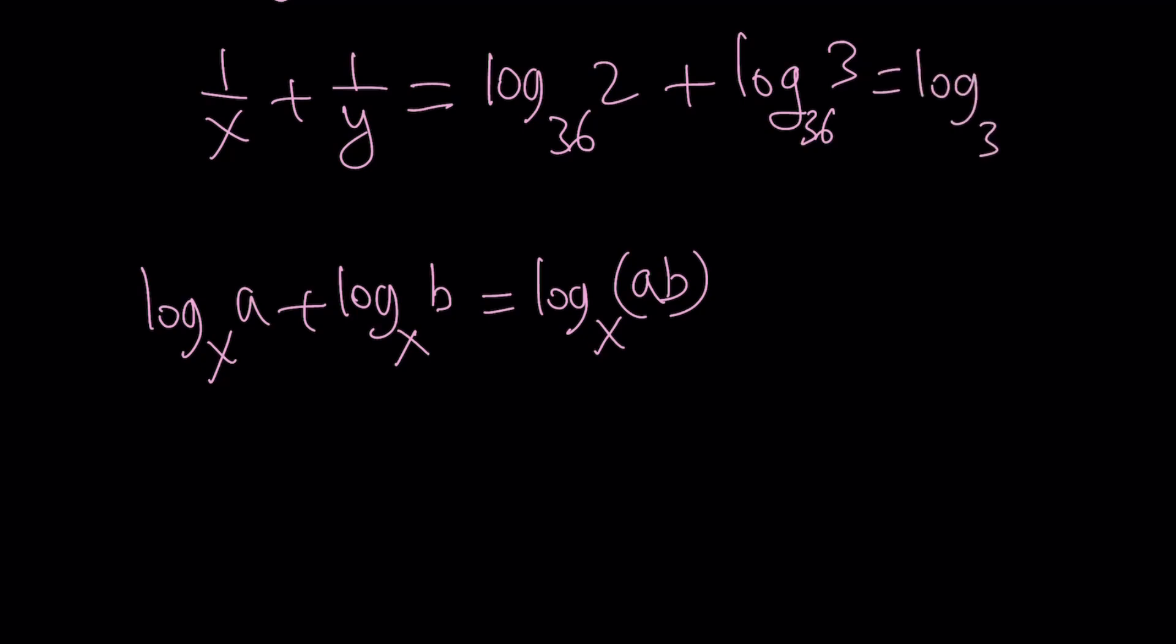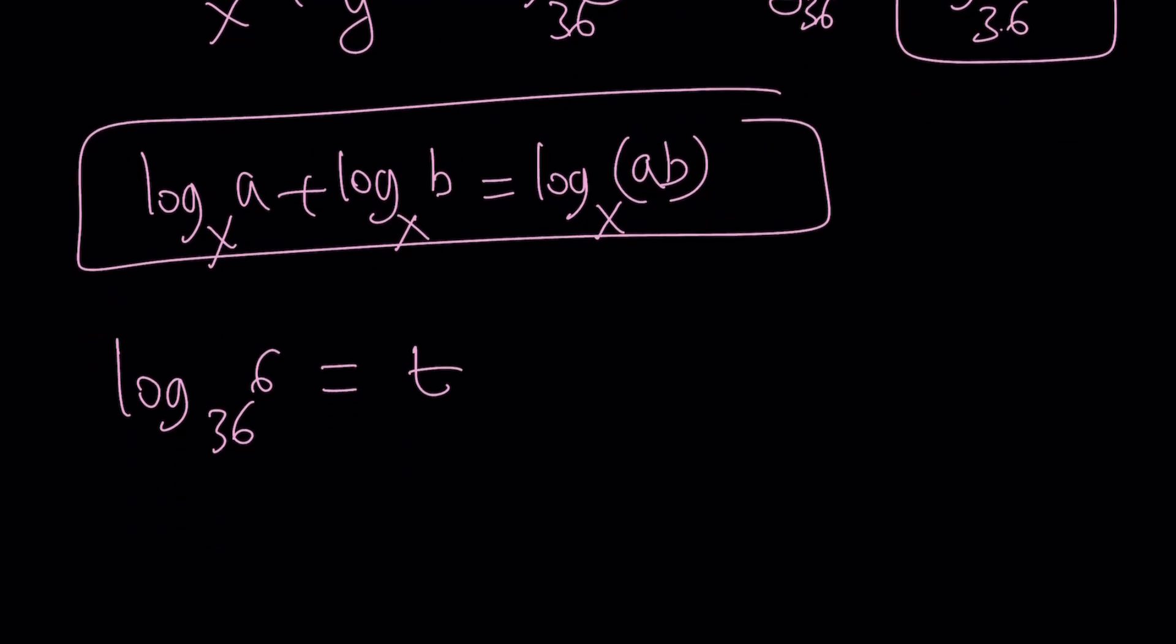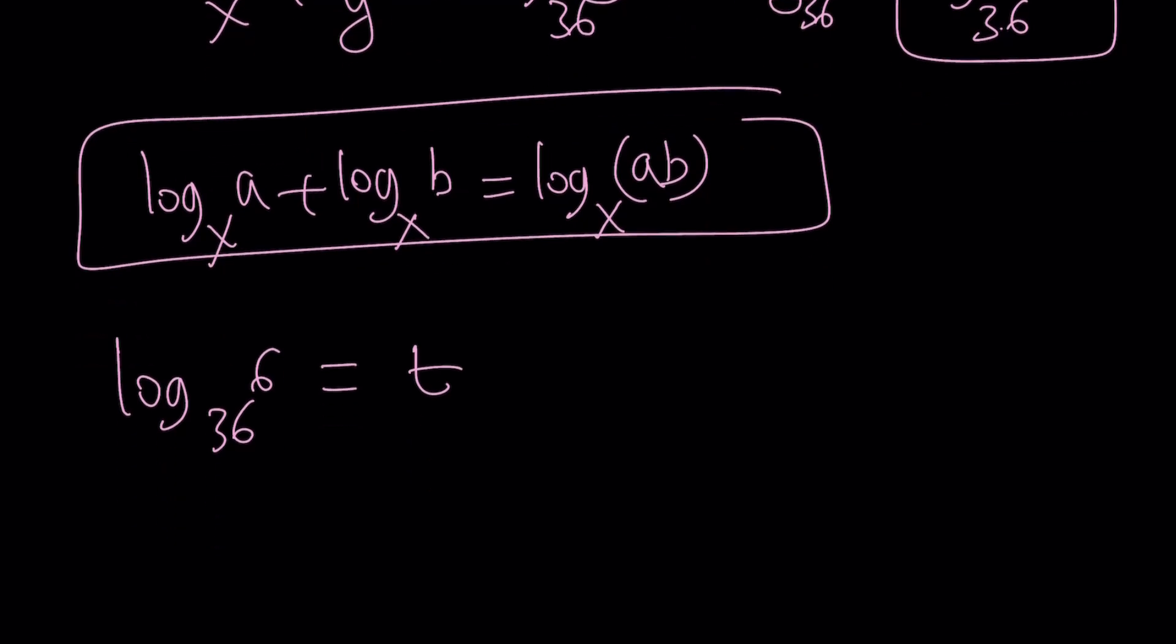This becomes log 2 times 3, which is 6. So I got to this number. Okay, that's progress, right? How am I going to evaluate it? Suppose you didn't know what it meant, but if you think about it, 36 to the power of what number equals 6, I'm pretty sure you know the answer, but let's pretend we don't know what it is, and set it equal to t. We're overusing t these days. We should use coffee sometimes, or Coke, I don't know, or Fanta, whatever your favorite drink is.